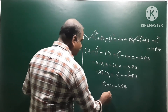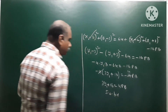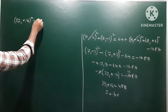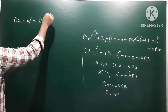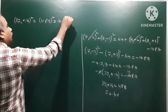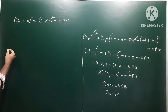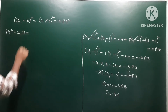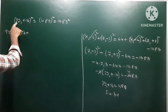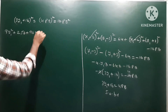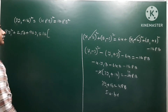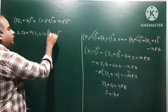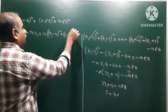Squaring on both sides: (3y1 plus 16)² equals (4PB)² which gives 16 PB². We substitute PB² with the distance expression: (x1 minus 2)² plus (y1 plus 3)².